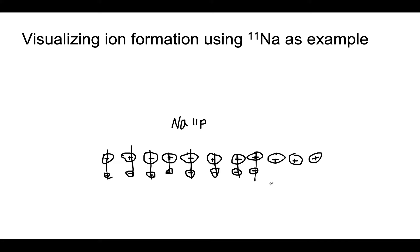It's really important to realize that during ion formation, atoms do not lose protons. If an atom adds or loses protons, it becomes a completely different atom. What happens during ion formation is that the atom gains or loses electrons. I hope this helps you visualize why we get a positive charge when we lose an electron.